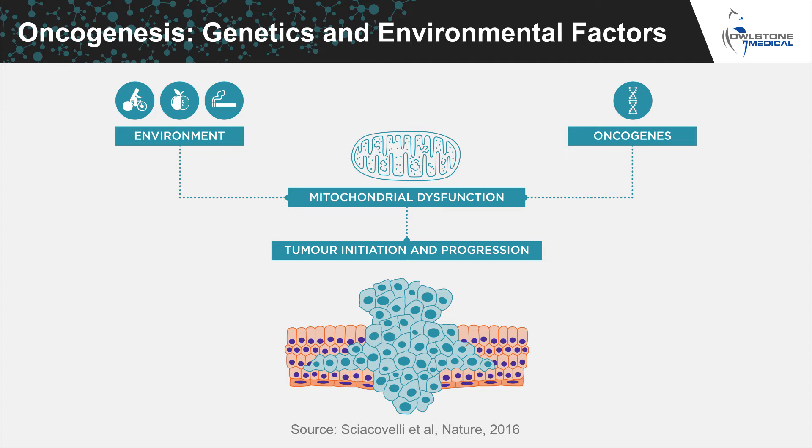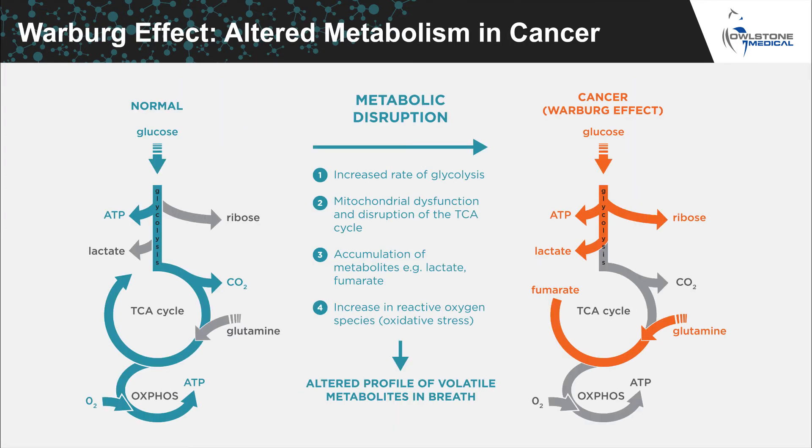Environmental factors and oncogenes can both lead to mitochondrial dysfunction, which brings about metabolic changes in cancer cells. Cancer is a good example of disease changing the body's metabolism. We've known for about a hundred years that cancer cells have an altered metabolism, even at a very early stage, which is crucial when thinking about early stage detection. Cancer is characterized by rapid growth, which means the cells have altered metabolic requirements. Mitochondrial dysfunction in cancer cells causes them to metabolize glucose differently, which is referred to as the Warburg effect. This involves a disruption of the normal citric acid cycle and a switch to an anaerobic pathway.